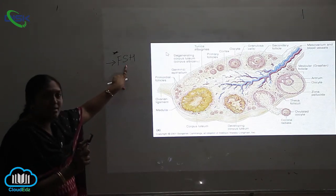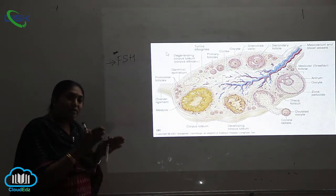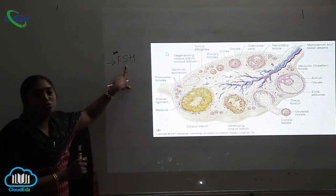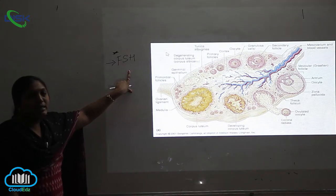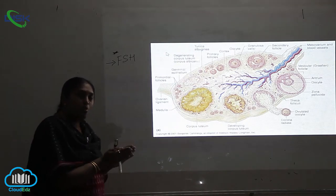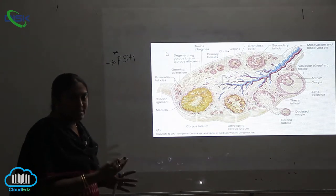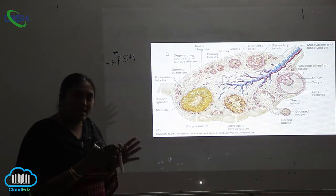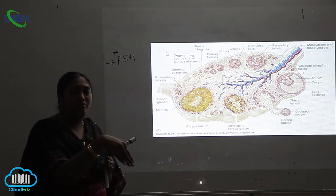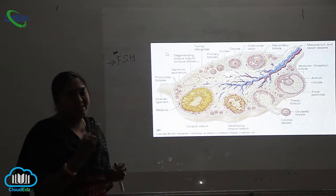The fallopian tubule's contraction and relaxation all depend upon the release of follicle stimulating hormone. Inside the ovary, different cycles are formed, and the egg travels from the ovary into the infundibulum and finally lodges into the ampulla or the fundus regions.